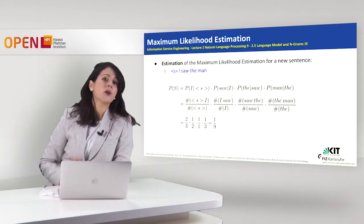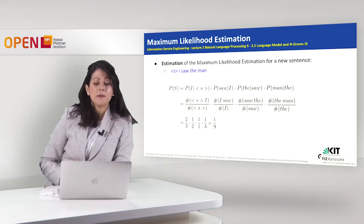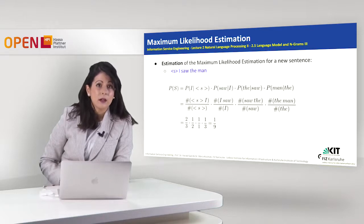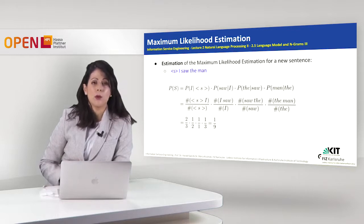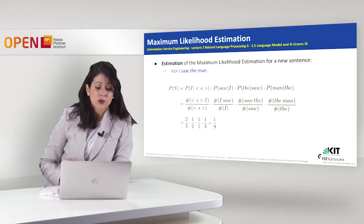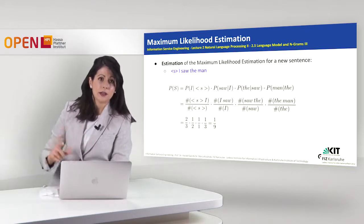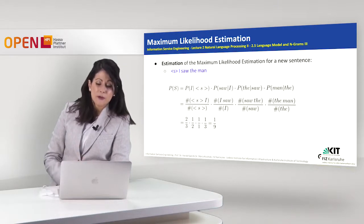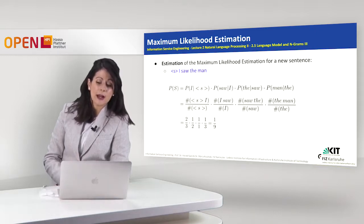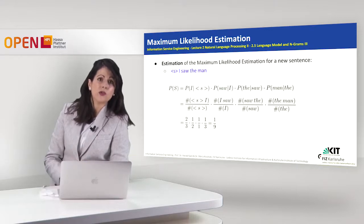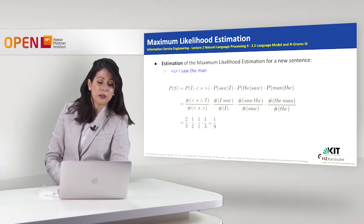Let's say we used our corpus and trained our model. Now we want to estimate the maximum likelihood estimation for a new sentence — a test case. The new sentence is 'I saw the man,' which is similar to 'I saw the boy' from training. We split it into bigrams and compute the probability of each bigram using MLE. The bigrams are: I given start, saw given I, the given saw, and man given the. Applying the MLE formula with bigram and unigram counts, we end up with a probability of one divided by nine for this new sentence.